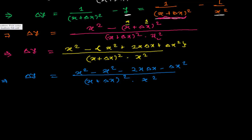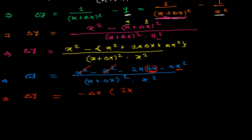Now see what is going to be cancelled: x squared and x squared will cancel out. So delta y equals — now, delta x is common in both remaining numerator terms, so I take out minus delta x as a common factor, giving minus delta x times (2x plus delta x), all divided by (x plus delta x) squared times x squared.